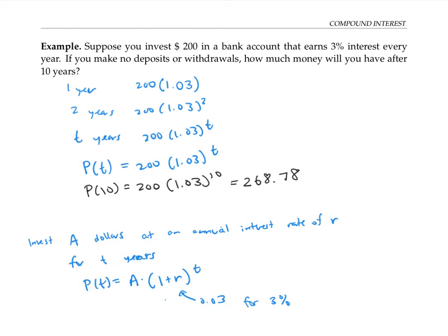In this problem, we've assumed that the interest accumulates once per year. But in the next few examples, we'll see what happens when the interest accumulates more frequently — twice a year or every month, for example.